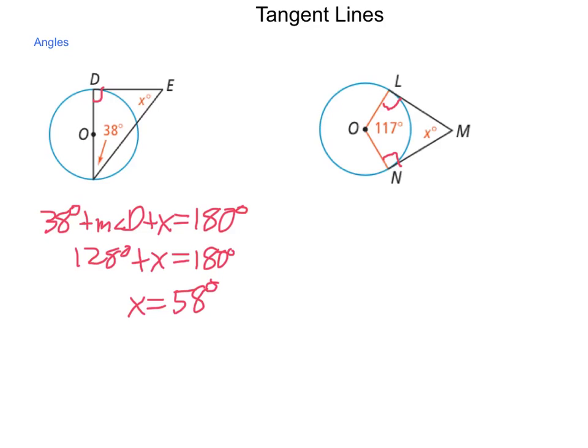So the measure of angle O plus the measure of angle L plus the measure of angle N plus the measure of angle M would have to equal 360. Going through and using some substitutions, 117 degrees plus 90 plus 90 plus X equals 360.